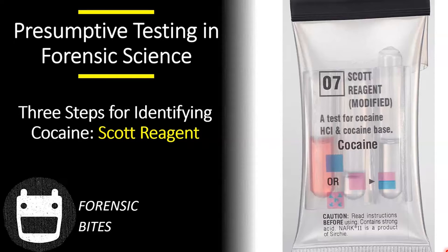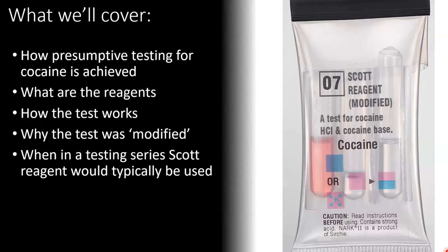Hello and welcome to Forensic Bytes. Today we're going to be talking about Scott's reagent and the three steps for presumptively identifying cocaine. What we're going to cover is how presumptive testing for cocaine is achieved, the identity of the three common reagents in the test kit, how that test kit actually works, and why the test was modified from a simplified test. We'll finish on where in a testing series Scott's reagent is typically used.